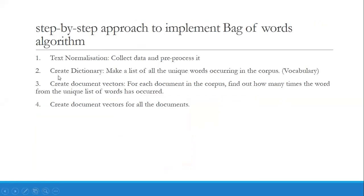Here are the step-by-step processes. First, we apply text normalization. Next step is creating the dictionary. Then the third step, create document vectors. And the fourth step, create document vectors for all the documents.